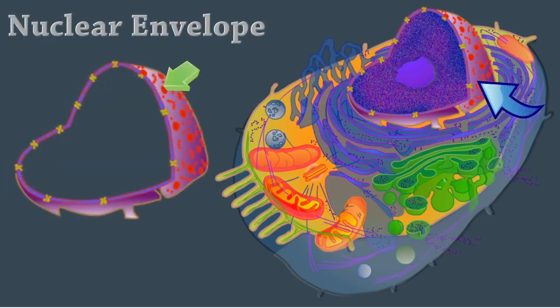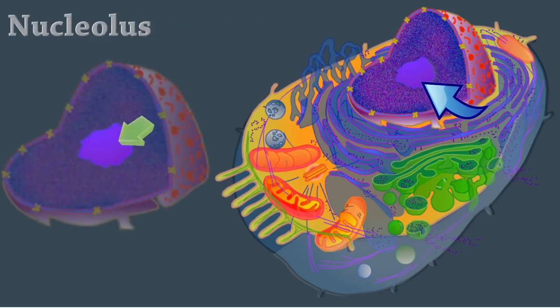The nuclear envelope is a double membrane structure that is pierced by pores. The outer membrane is continuous with the endoplasmic reticulum. The nucleolus is a small, dense body within the nucleus. It's composed of ribosomal RNA and proteins, and it's the site of ribosome subunit manufacture. Nucleoli also assemble signal recognition particles and play a role in the cell's response to stress.